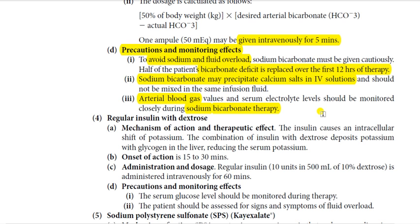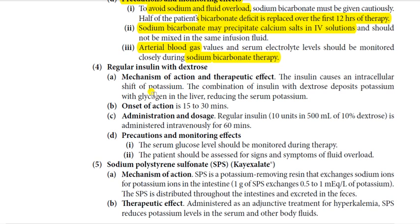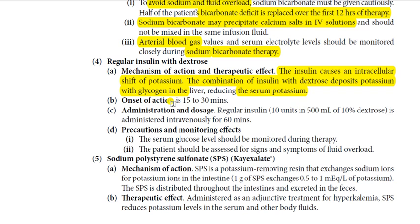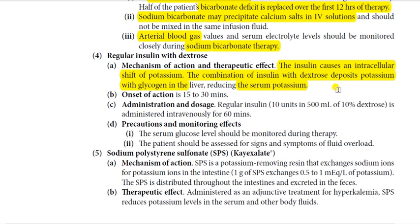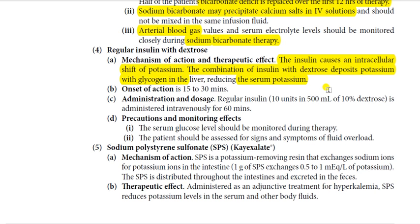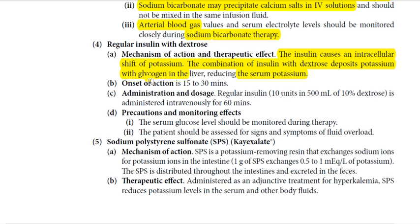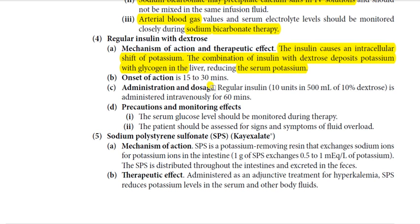In addition, regular insulin with dextrose will also be given. Insulin causes an intracellular shift of potassium. The combination of insulin with dextrose deposits potassium with glycogen in the liver, reducing serum potassium. The purpose of giving dextrose is to prevent the patient from going into hypoglycemia from insulin, while potassium binds with glycogen and gets stored in the liver, thereby reducing serum potassium level. The onset of action of insulin is 15 to 30 minutes.